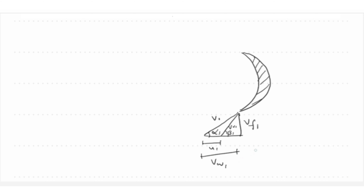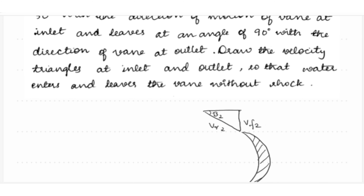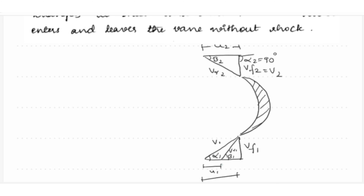At outlet, we draw the relative velocity vr2 making an angle beta 2, and draw vf2. Since alpha 2 is equal to 90 degrees, unlike the previous problem where alpha 2 was acute, v2 shifts to the vertical direction, so vf2 is equal to v2. The value u2 completes the outlet velocity triangle. This is how the velocity triangles at inlet and outlet are drawn.